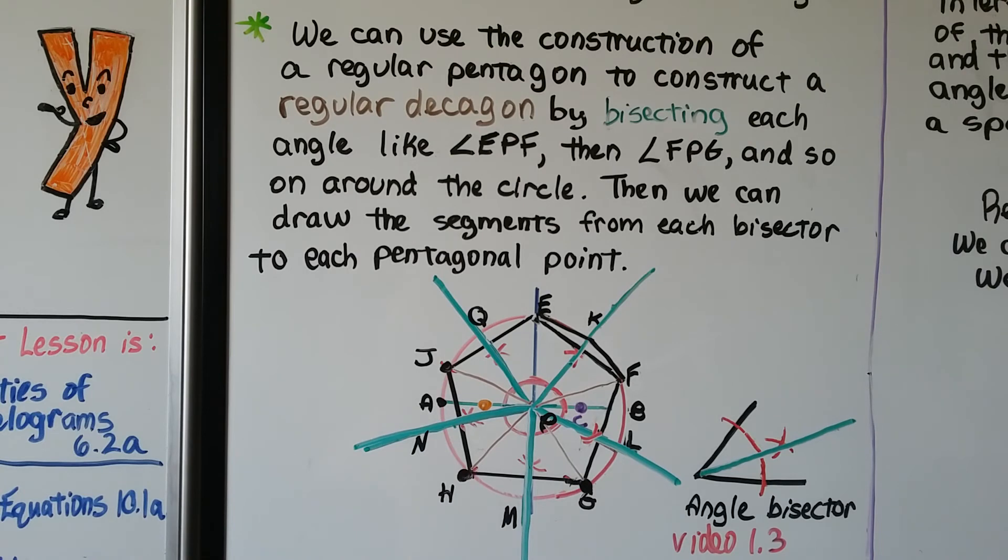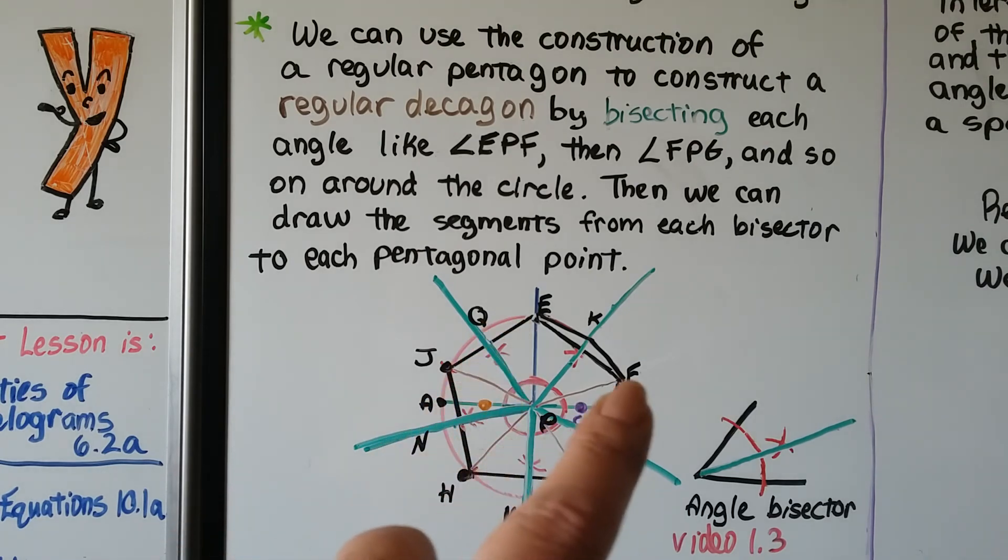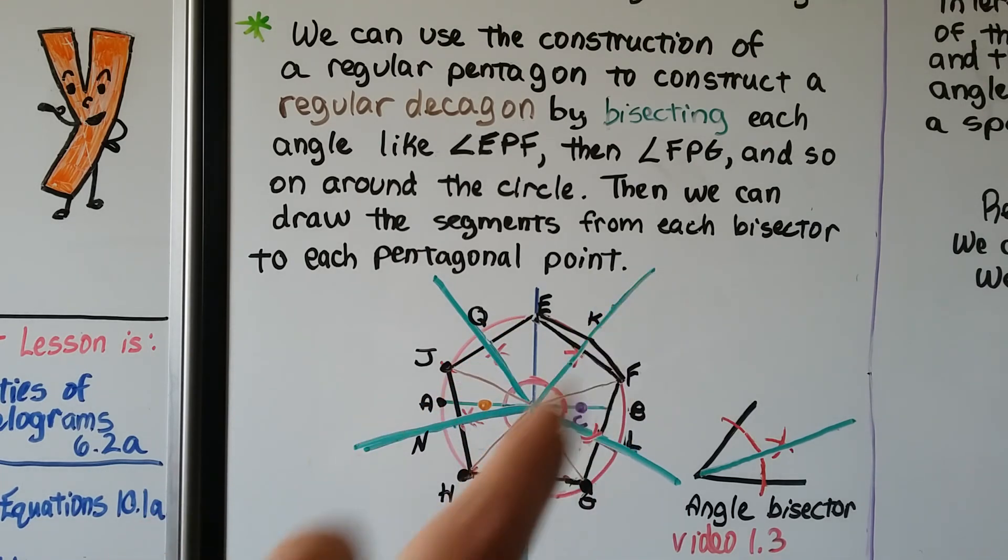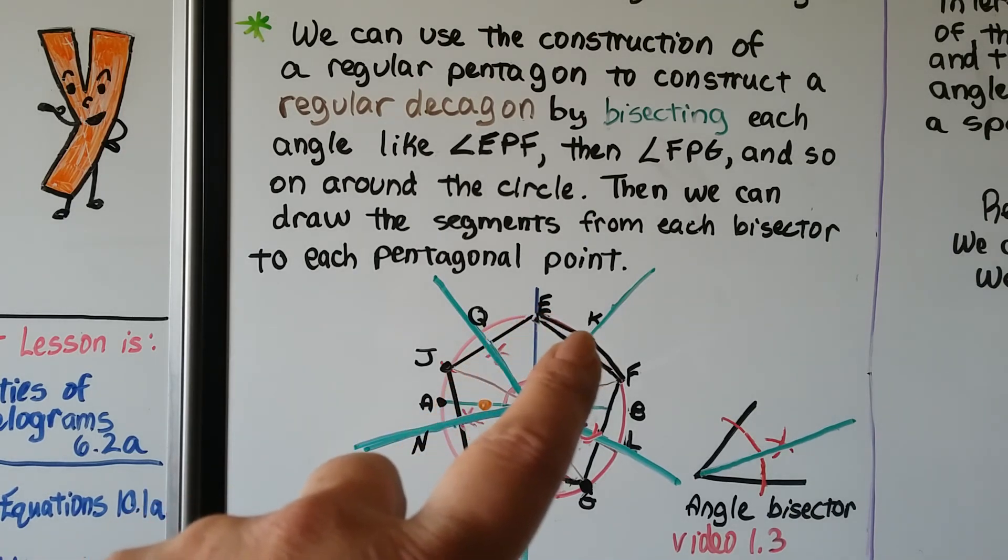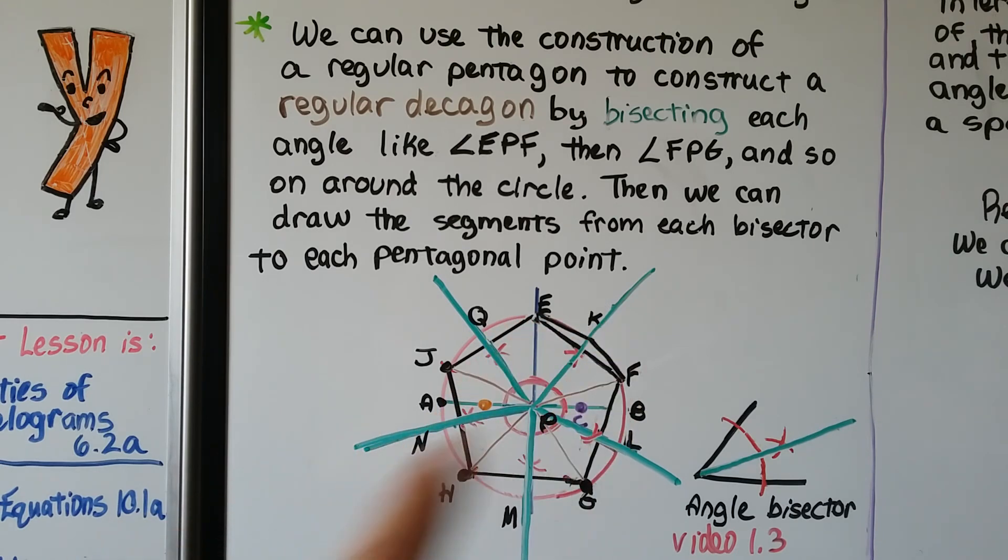We can use the construction of our regular pentagon to construct a regular decagon—that's a ten-sided figure—by bisecting each angle, like angle EPF. So we make a bisector here and we do it to each one. We've got five bisectors of each of our angles. We can connect those to each pentagonal point, like from this E to that point, we can label that K, and from K to F. We'll make a regular decagon, a ten-sided figure.